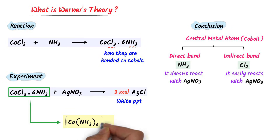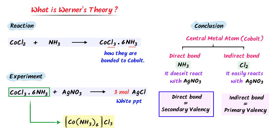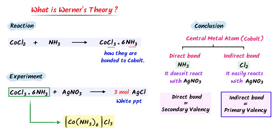He firstly bonded six molecules of NH₃ to cobalt, then put square brackets around it. Lastly, he bonded three chlorine ions to cobalt. Thus, this was the first coordination compound in chemistry suggested by Werner. Werner says that a direct bond is known as secondary valency and an indirect bond is known as primary valency.